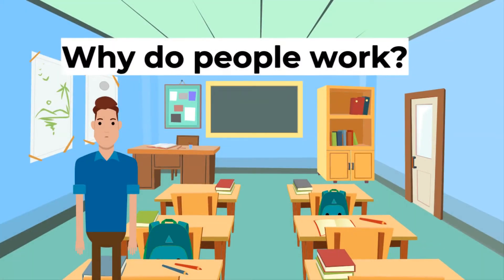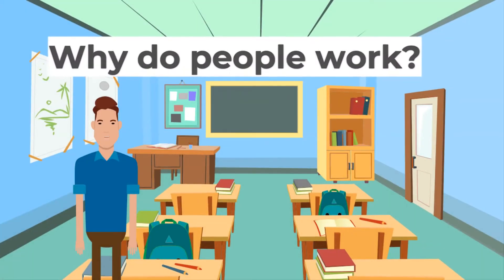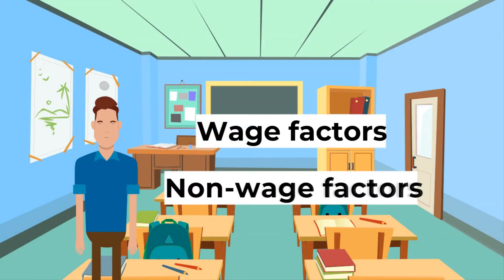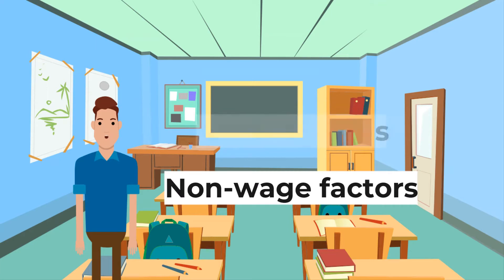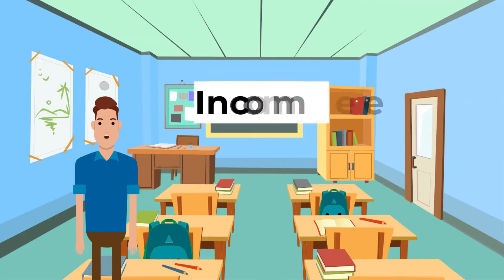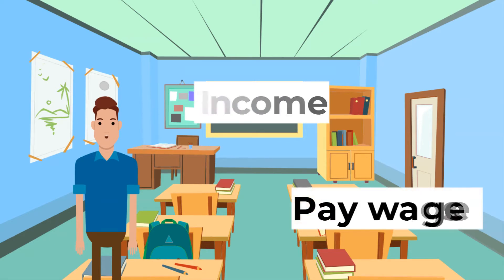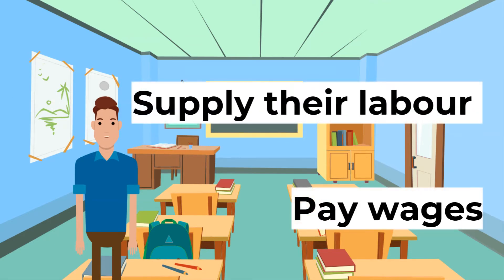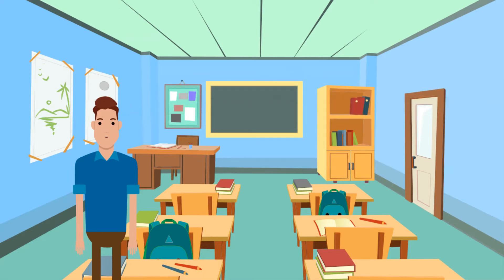Why do people work? This comes down to wage and non-wage factors. Let's first look at wage factors. Most people will supply their labor to firms to earn an income. Firms pay wages to workers to supply their labor to produce goods and services. Paid employment provides people with money to buy the goods and services they need and want and cannot produce themselves.